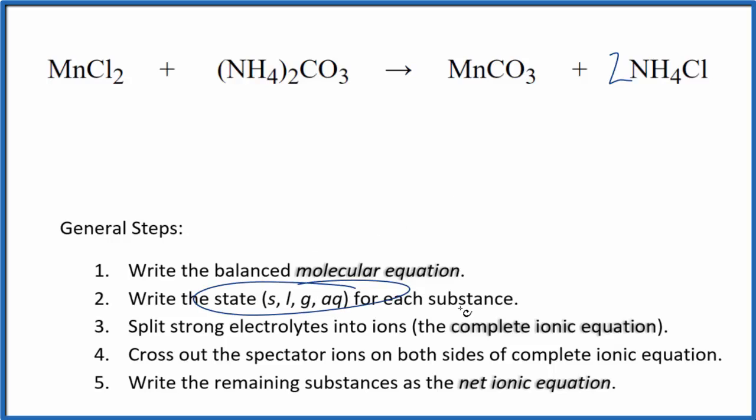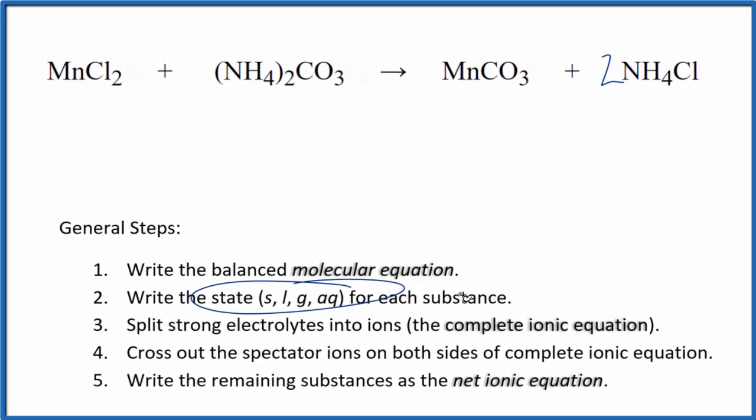Now we can write the state for each substance. That looks like this. Compounds with the chloride ion in general, they're soluble. Compounds with the ammonium ion, if you know your solubility rules, very soluble.